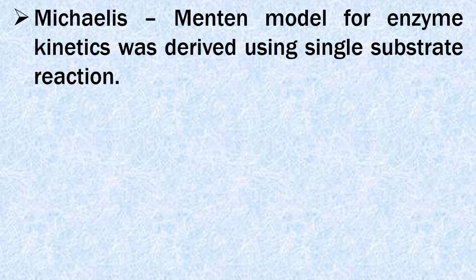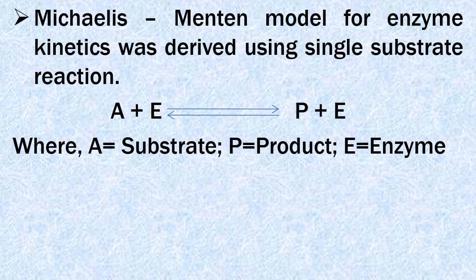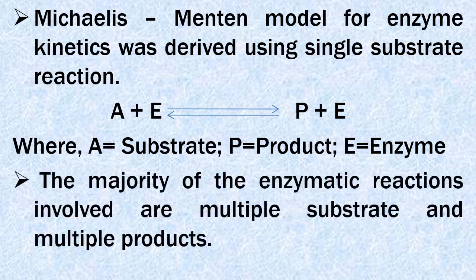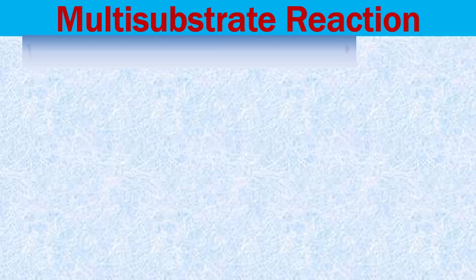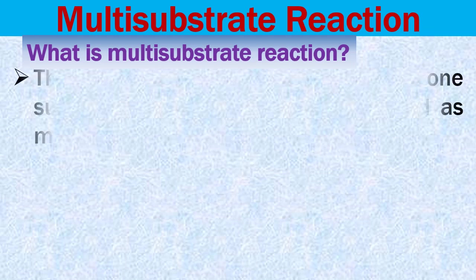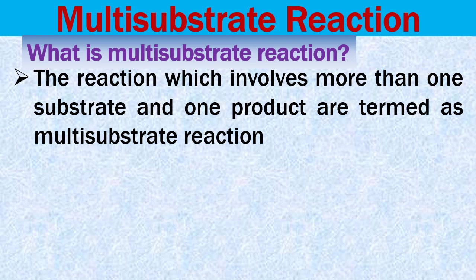The Michaelis-Menten model, which is widely used for enzyme kinetics, was derived using single substrate reaction, simply denoted as A plus E, where substrate A reversibly binds with enzyme E to form product P, and the enzyme is released at the end. However, the majority of enzymatic reactions involve multiple substrates and multiple products.